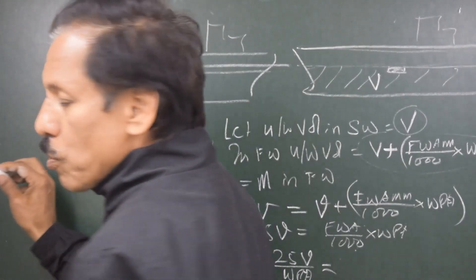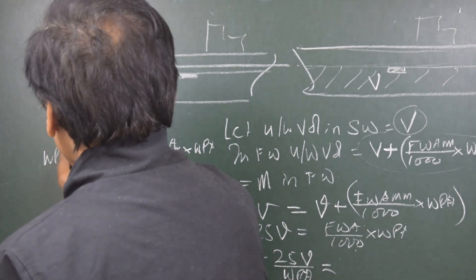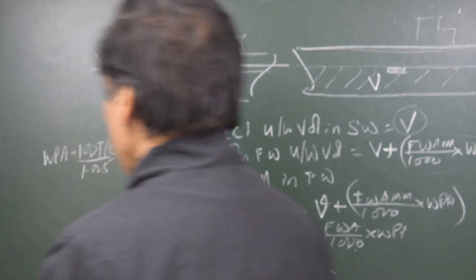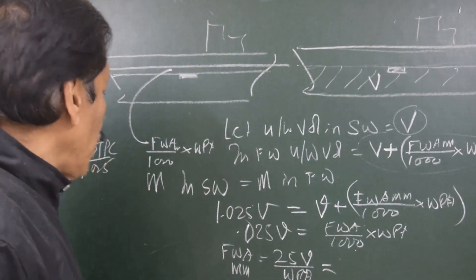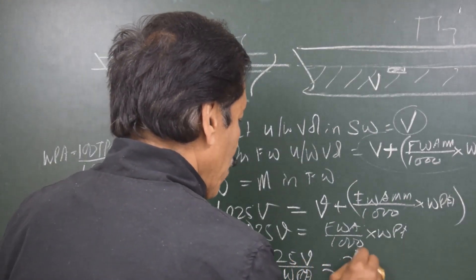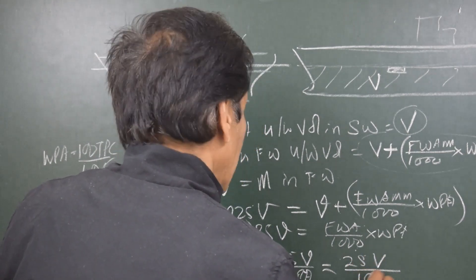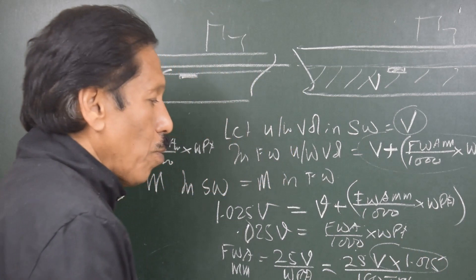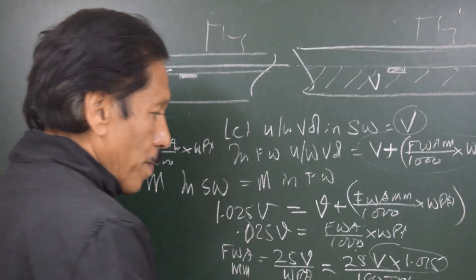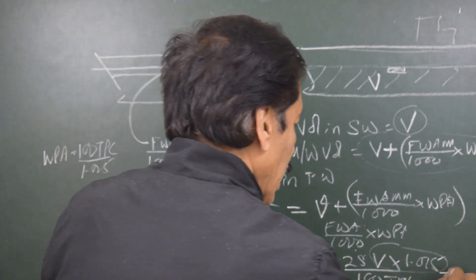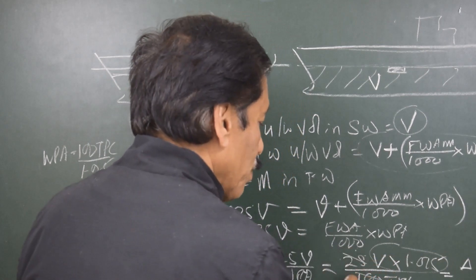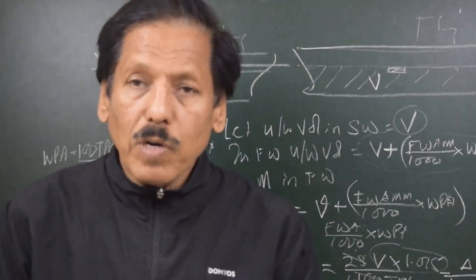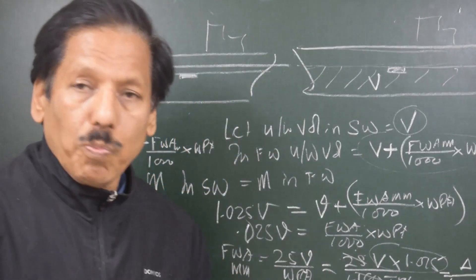A few minutes back we established that water plane area equals 100 × TPC / 1.025. Substituting this, the right-hand side becomes 25V divided by (100 × TPC / 1.025). This simplifies — since V × 1.025 is nothing but the displacement of the vessel — to: displacement divided by (4 × TPC). So fresh water allowance in millimeters equals displacement divided by 40 × TPC.